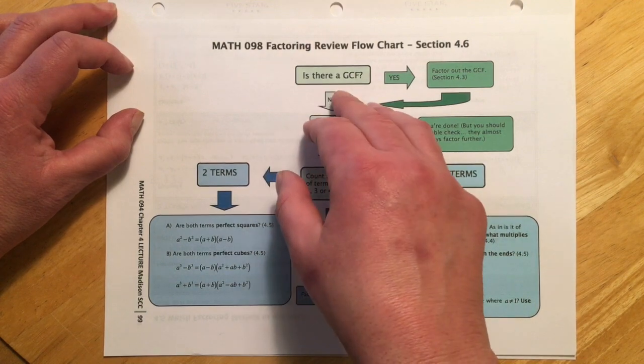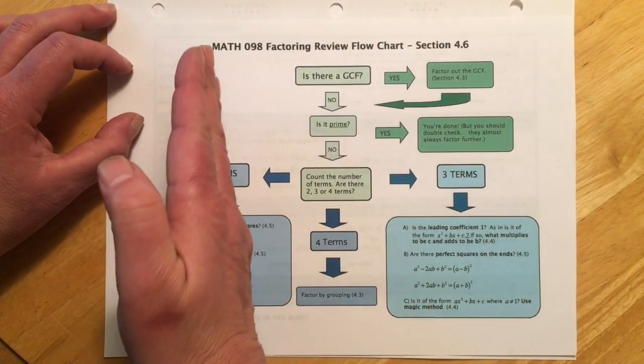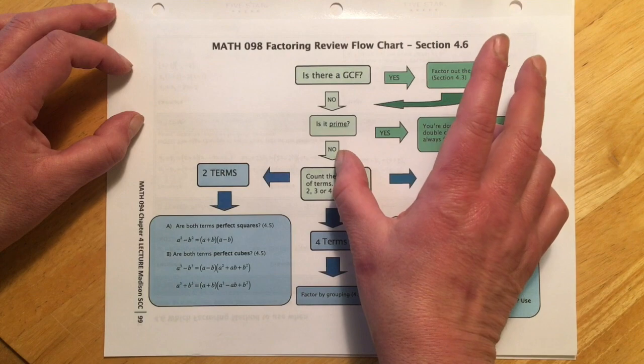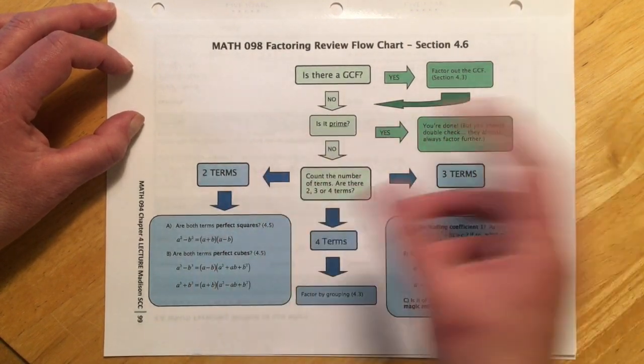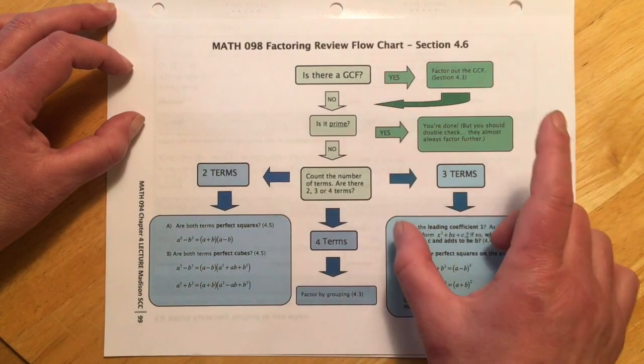So the first thing you do is, is there a GCF? And if there is, we pull that out front and then we keep working on whatever's still left in the parentheses. Now and again, that won't factor further, but mostly in this section, they're absolutely going to factor further.